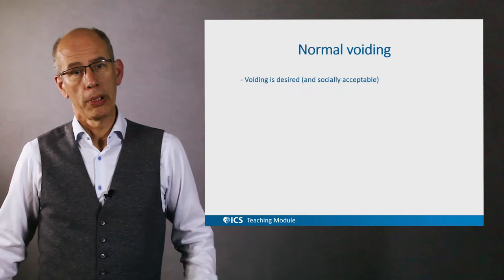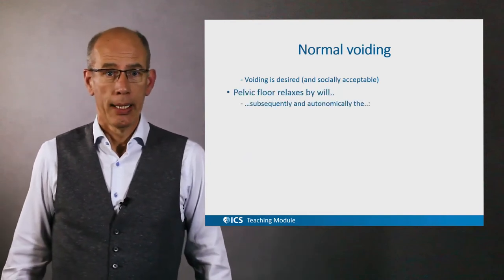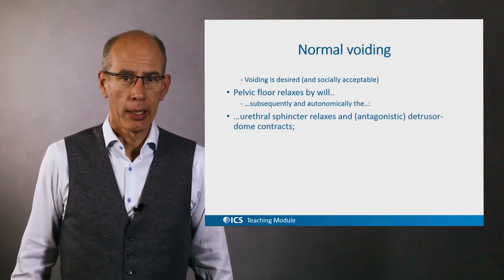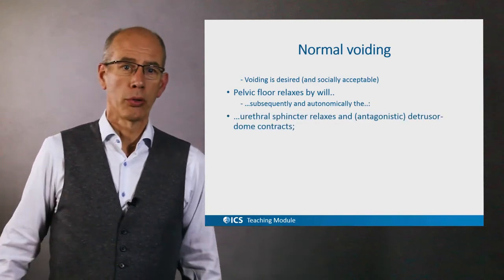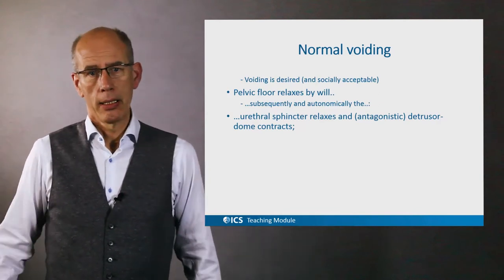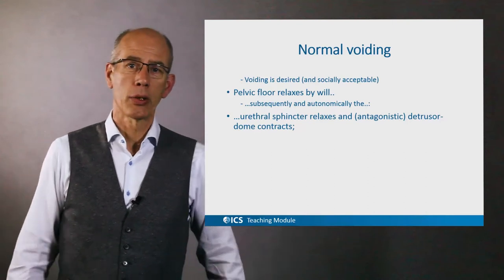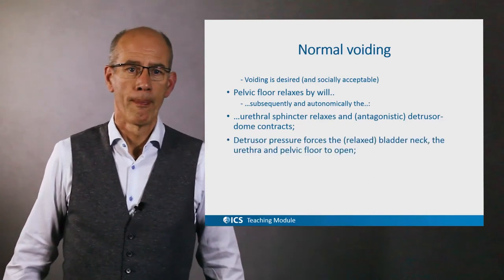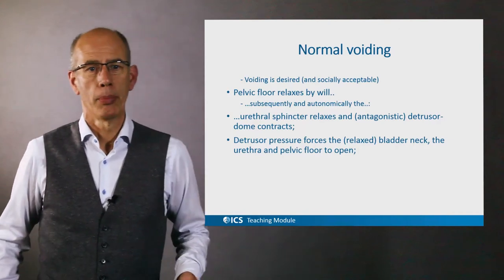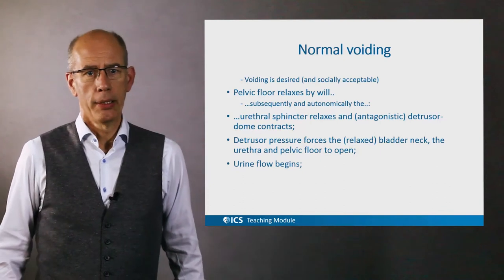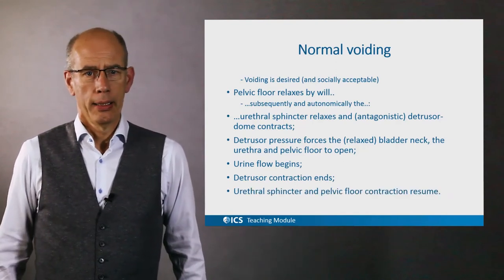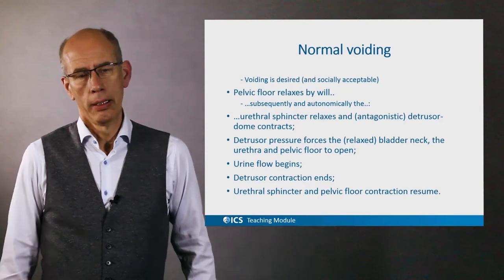Voiding can take place when it is socially acceptable. By will, the pelvic floor relaxes, and autonomically the urethral sphincter relaxes and the antagonistic detrusor dome contracts. The urethral sphincter cannot elongate by itself — it needs the antagonistic energy of the detrusor dome. The detrusor pressure forces the bladder neck, urethra, and pelvic floor to open, and the urine is pushed out by detrusor pressure and the urine flow begins, until the detrusor contraction ends and sphincter and pelvic floor contraction resumes and the bladder fills again.